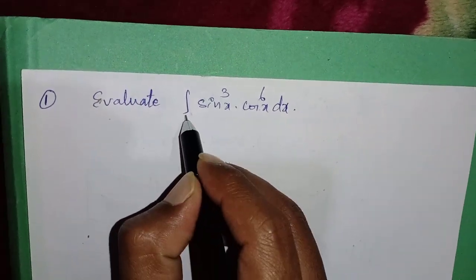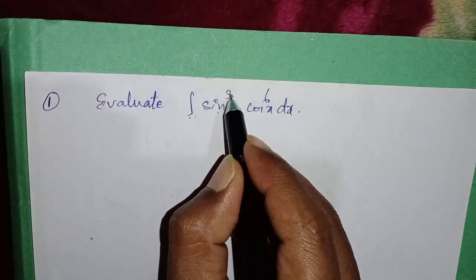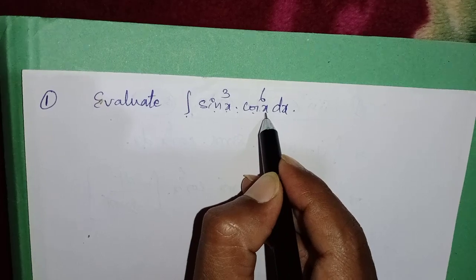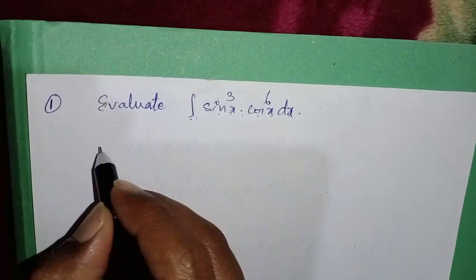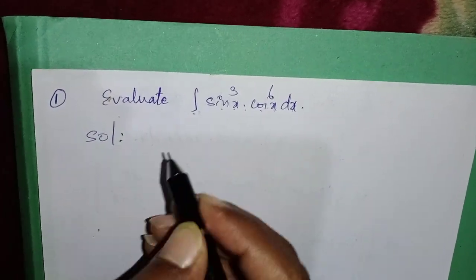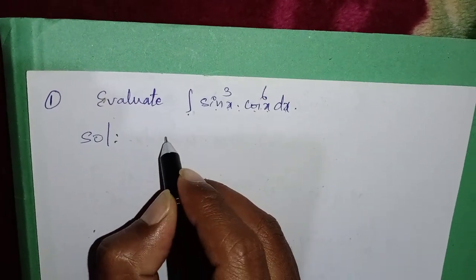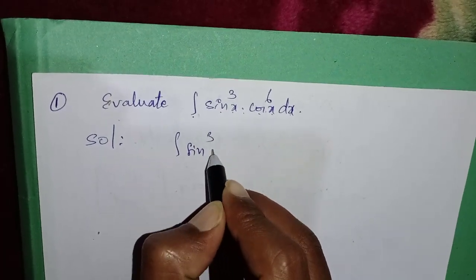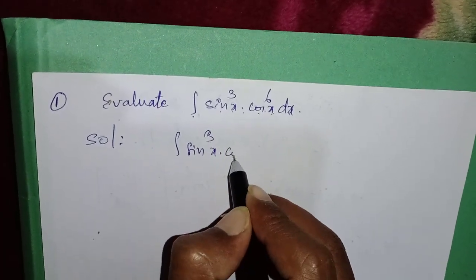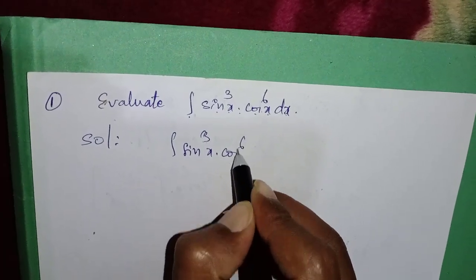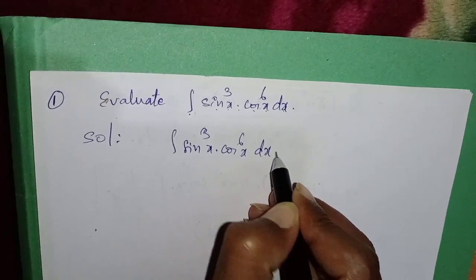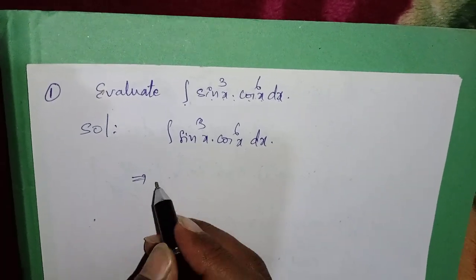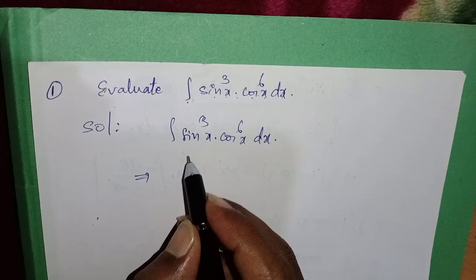Evaluate the integral of sin³x · cos⁶x dx. Solution: first write the given data as integral of sin³x · cos⁶x dx.